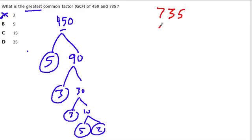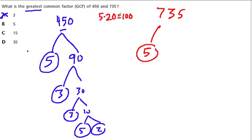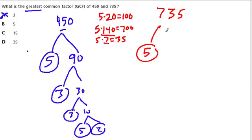What about 735? Five times something is 735. Five times 100 is 500, five times 40 is 200 — that's 700. 35 more to go, and 5 times 7 is 35. So 5 times 140 and 5 times 7 gives us 735. Combining 140 and 7, we get 5 times 147 is 735.